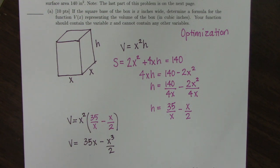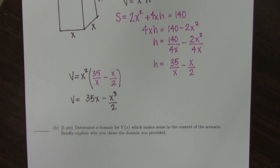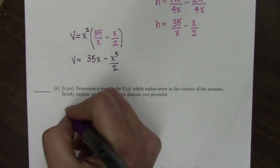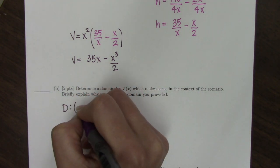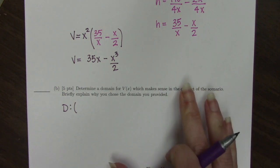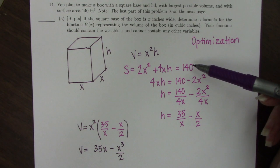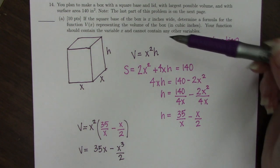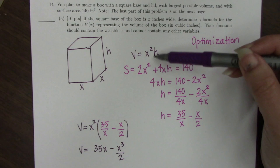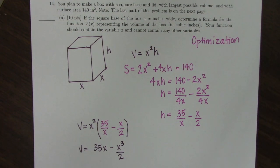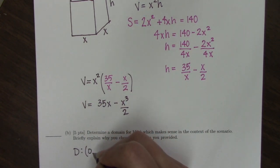Now part B says, determine a domain which makes sense and explain why you chose the domain that you chose. So since we're in variable x, the domain is going to be the values of x that are allowed to be plugged in. Because the surface area of this box has to be 140, there's no way x can be 0 because if I plug 0 in here, I get a volume of 0 which means there's no box at all. So x could be close to 0 but it cannot include 0.